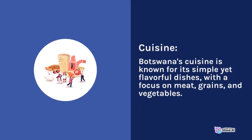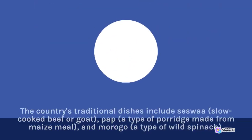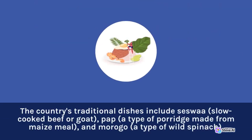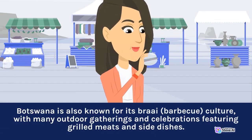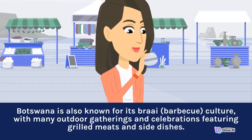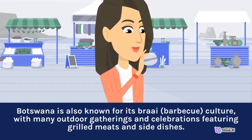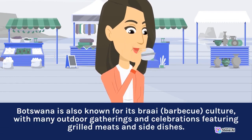Botswana's cuisine is known for its simple yet flavorful dishes, with a focus on meat, grains, and vegetables. The country's traditional dishes include seswaa (slow-cooked beef or goat), pap (a type of porridge made from maize meal), and morogo (a type of wild spinach). Botswana is also known for its braai (barbecue) culture, with many outdoor gatherings and celebrations featuring grilled meats and side dishes.